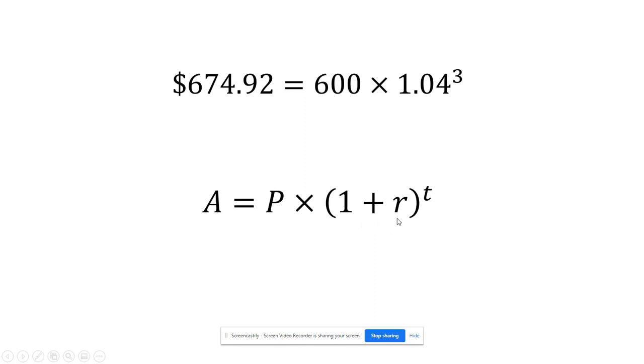But in general, it's going to be (1 plus R) to the T power. And we just substitute the principle, the rate for the annual interest, and the number of years that we want to figure the balance for. And that's where the compound interest formula comes from.